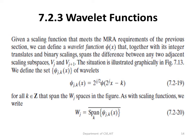The next multi-resolution analysis topic is the wavelet function. If we have a scaling function meeting all MRA requirements, we can define a wavelet function ψ(x) that, along with its integer translates and binary scalings, spans the difference between any two adjacent scaling subspaces V(j) and V(j+1). The set ψ(j,k,x) = 2^(j/2) ψ(2^j x − k), where k belongs to Z, spans the W(j) spaces. We can write W(j) = span_k ψ(j,k,x).